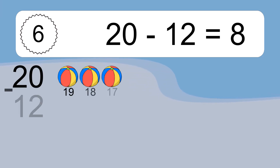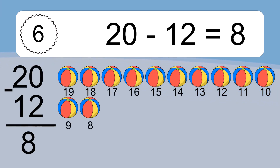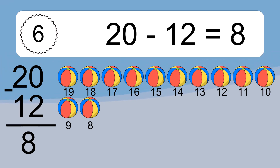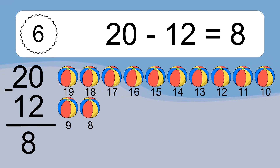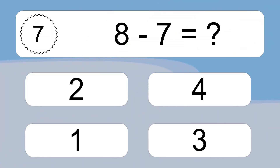20 minus 12 equals what? 20 minus 12 equals 8. Let's count it: 19, 18, 17, 16, 15, 14, 13, 12, 11, 10, 9, 8.